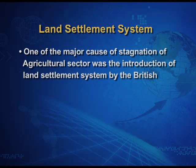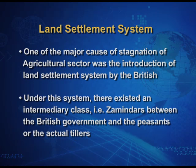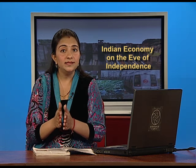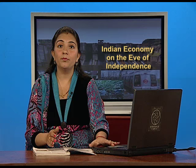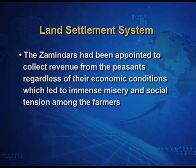One of the major causes of stagnation in the agricultural sector was the introduction of the land settlement system by the British. Under this system, there existed an intermediary class — the zamindars — between the British government and the peasants or actual tillers. This zamindari class had been appointed by the British to collect revenue from the peasants regardless of their economic conditions, which led to immense misery and social tension among the farmers.